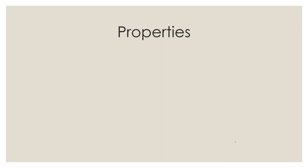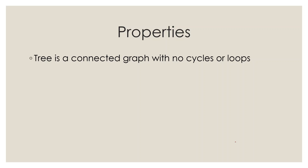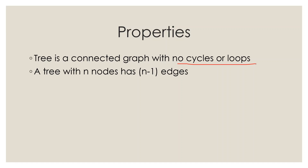Now let's look at the properties of a tree. The first property: a tree is a connected graph with no cycles or loops — cycles and loops are the same thing and are not allowed. The most important property is: a tree with N nodes has exactly N-1 edges.